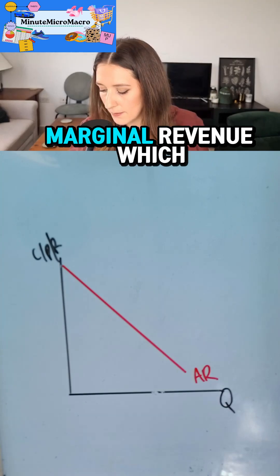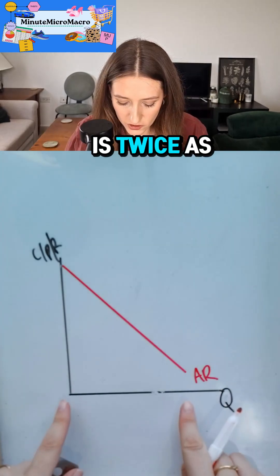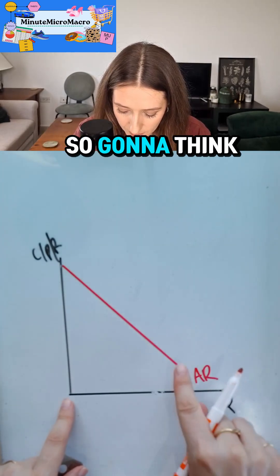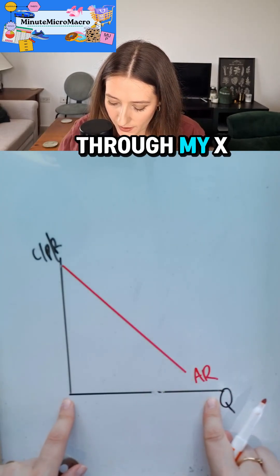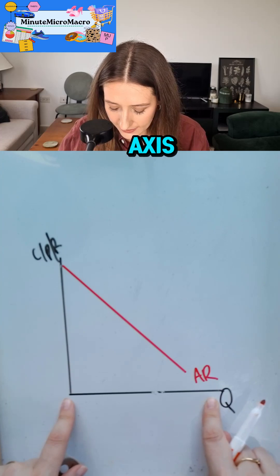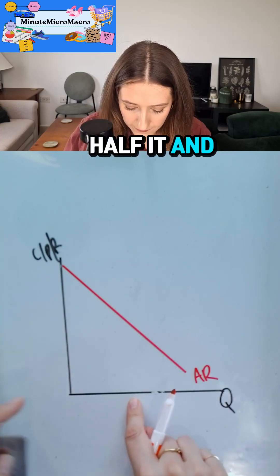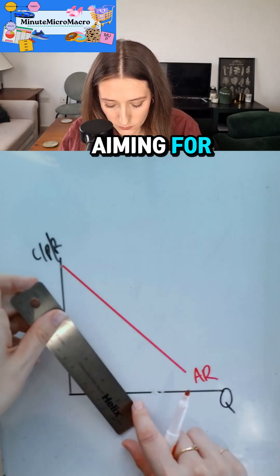We have our marginal revenue, which is twice as steep. We're going to think about where average revenue would cut through the x-axis, halve it, and that's what we're aiming for.